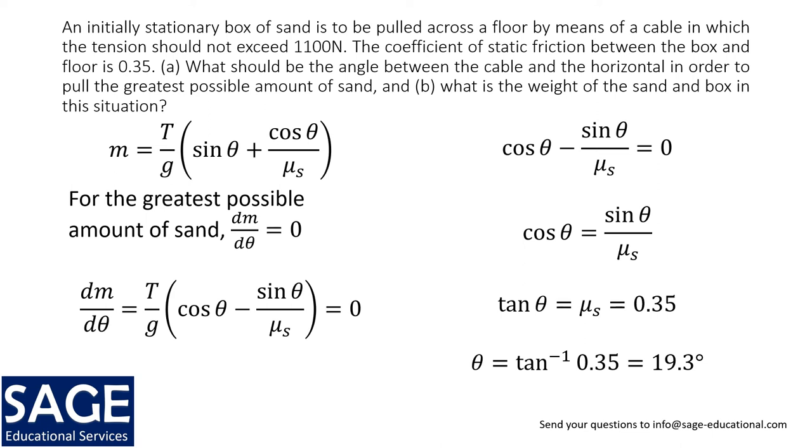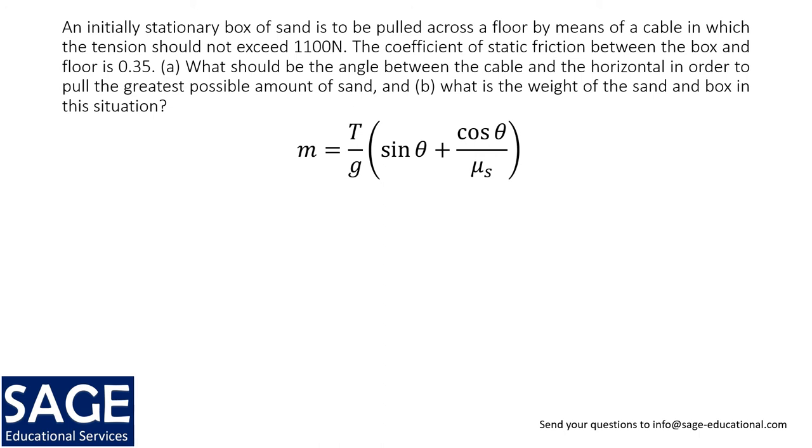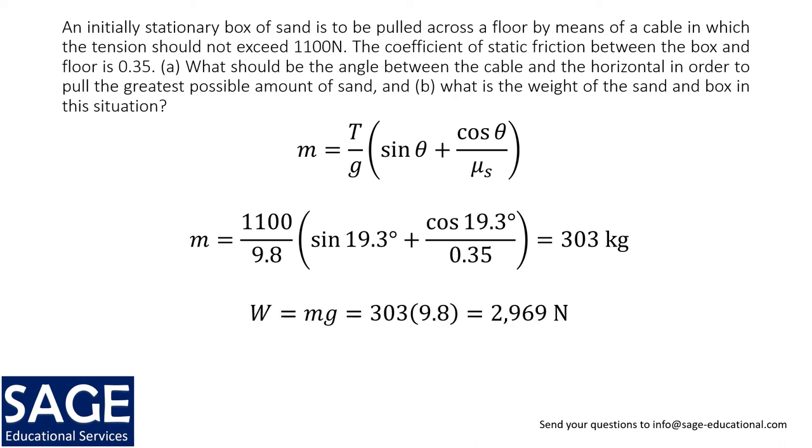The angle of 19.3 degrees is the angle for which maximum amount of sand would be pulled. Now I need to calculate the weight of the sand in the box. I already have the equation for the mass. Now all I need to do is substitute all these numbers. Here T is 1100, g is 9.8, theta is 19.3, and mu is 0.35. This gives me 303 kilograms, and then I can find the weight. Weight equals mg, which is 2969 newtons. So that brings me to the point where I have solved both parts of this problem.